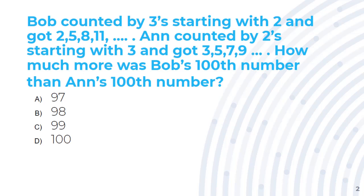What this means, if you notice that 2 minus 3, which were their first numbers is negative 1, then 5 minus 5 is 0, then 8 minus 7 is 1, then 11 minus 9 is 2. So you notice that their number is getting up higher and higher.